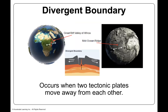Divergent boundaries occur when two tectonic plates move away from each other. They're moving away — you can see the arrows showing movement in opposite directions. The Great Rift Valley of Africa is a classic example of a divergent boundary.